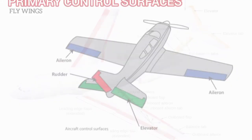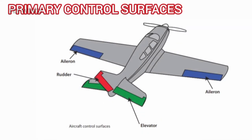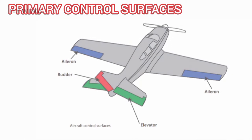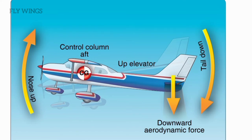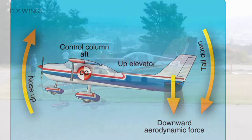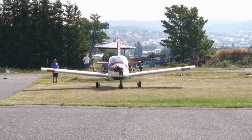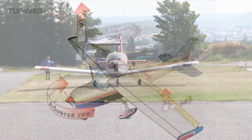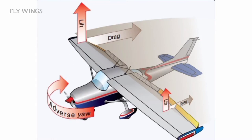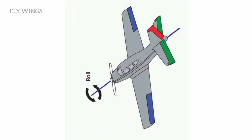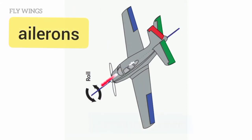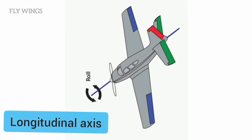The ailerons, elevator, and rudder constitute the primary control system and are required to control an aircraft safely during flight. Movement of any of the three primary flight control surfaces changes the airflow and pressure distribution over and around the airfoil. These changes affect the lift and drag produced by the airfoil and allow the pilot to control the aircraft about its three axes of rotation.